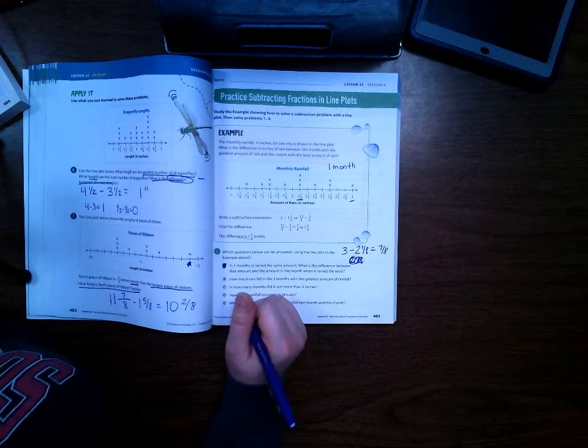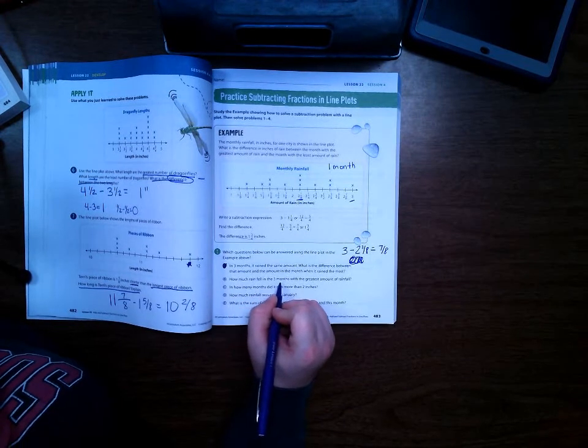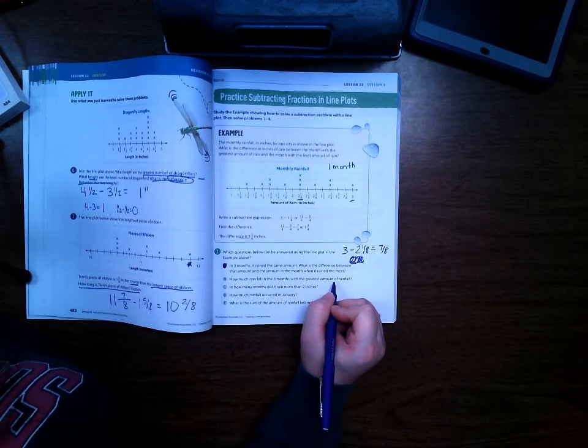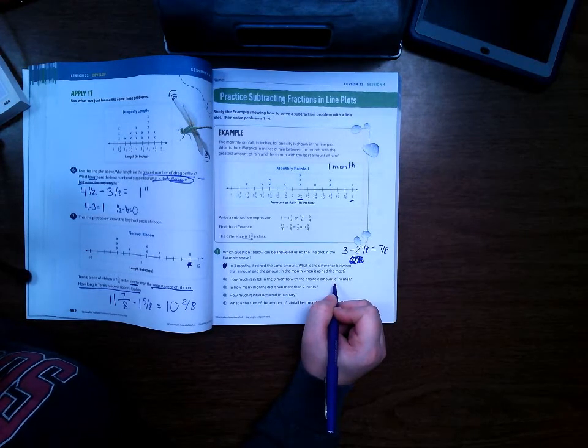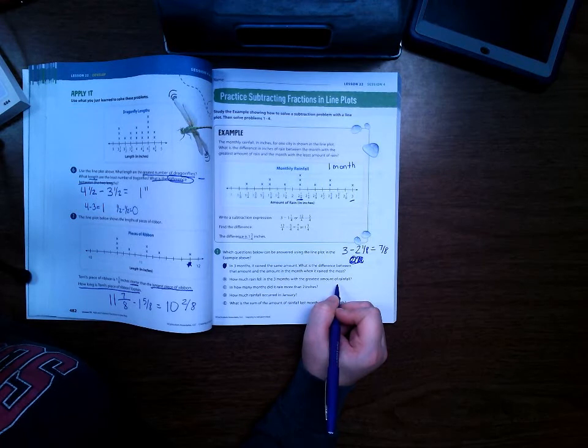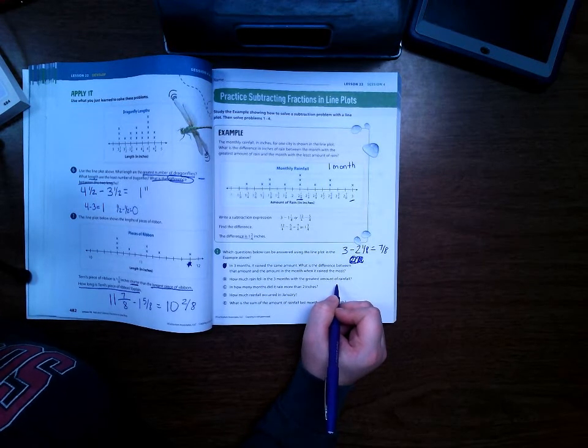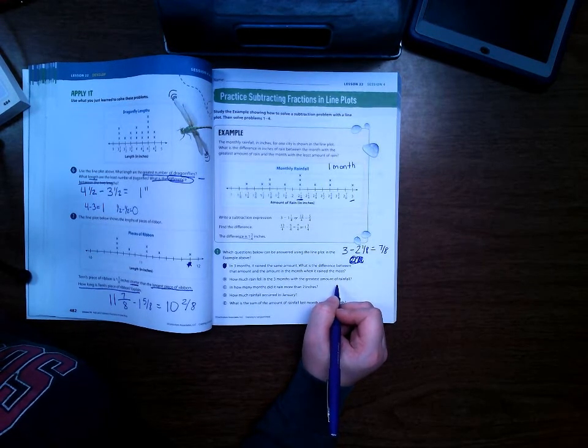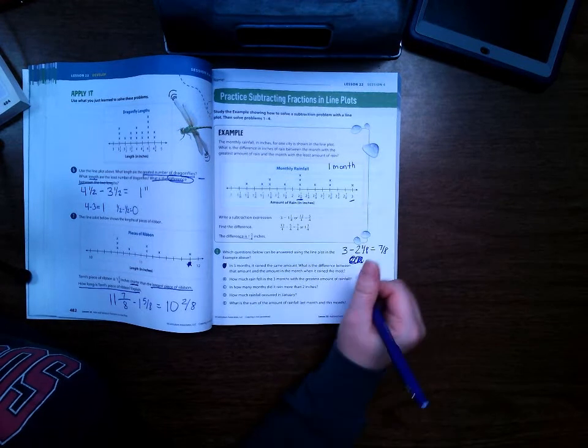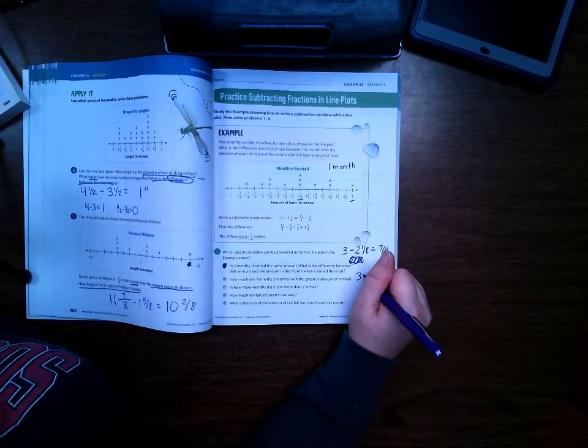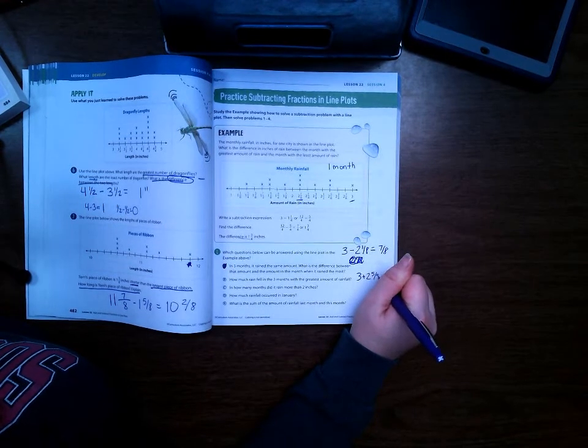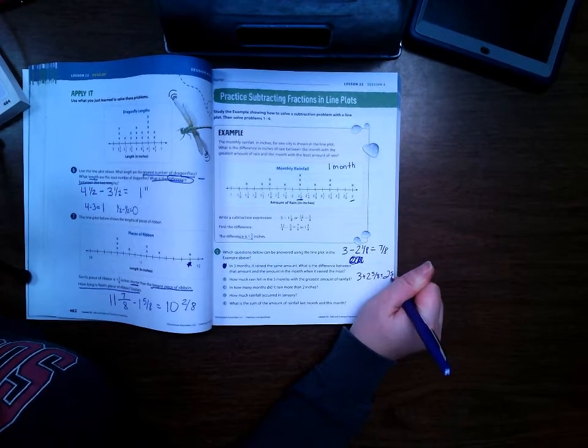On B, it says how much rain fell in the three months with the greatest amount of rainfall. So the months with the greatest amount, it would be 3 inches and then 2 and 5/8 plus 2 and 5/8. So yes, we can solve that problem.